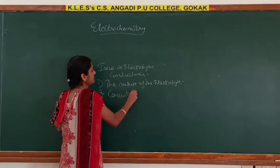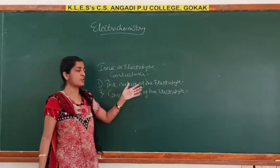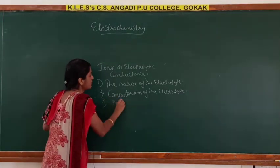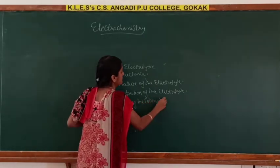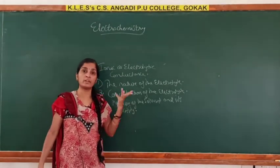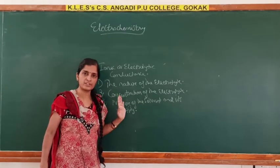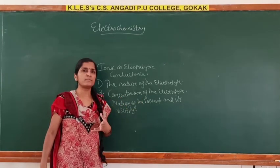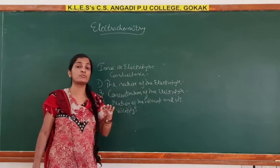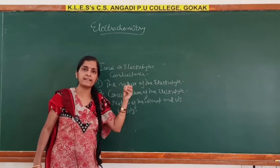The second factor is the concentration of the electrolyte — more concentration means more ions, which means higher conductivity. The third factor is the nature of the solvent and its viscosity. Polar solvents favor ionization of the electrolyte while non-polar solvents do not. Viscosity refers to resistance to flow — oil is more viscous than water, and the ions are carried by the solvents.